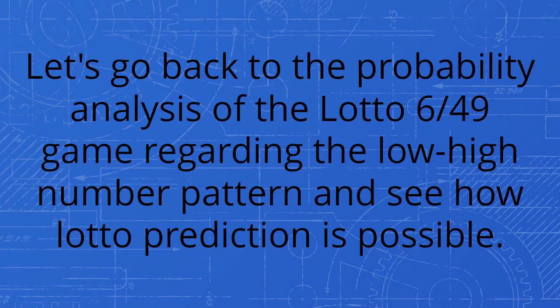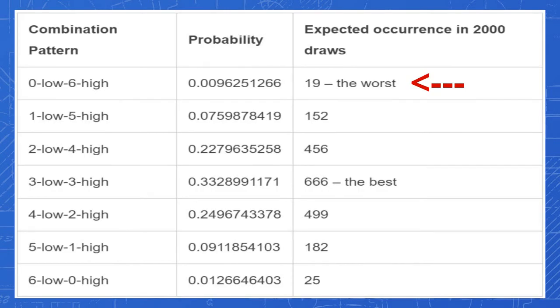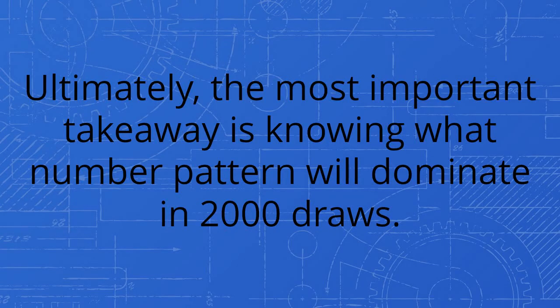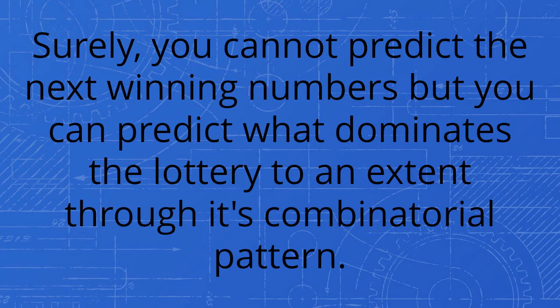Let's go back to the probability analysis of the lotto 6/49 game regarding the low-high number pattern and see how lotto prediction is possible. We can predict that a zero low six high pattern may occur 19 times in 2,000 draws because 0.0096251266 multiply by 2,000 equals 19. In the same way, we can predict that a three low three high pattern may occur 666 times in 2,000 draws because 0.3328991171 multiply by 2,000 equals 666. It will help if you avoid the all six high and all six low pattern and choose the three odd three even number pattern instead. Ultimately, the most important takeaway is knowing what number pattern will dominate in 2,000 draws. Surely you cannot predict the next winning numbers, but you can predict what dominates the lottery to an extent through its combinatorial pattern.